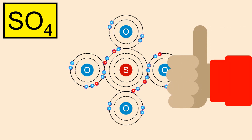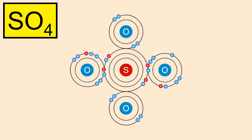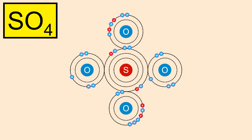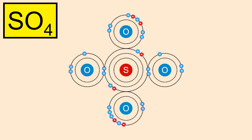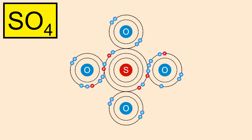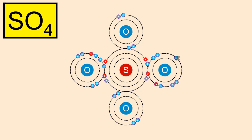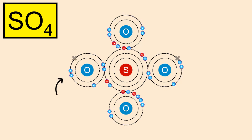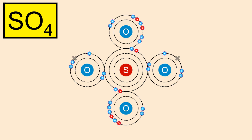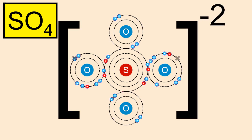This animated video shows how the octets of sulfur and the upper and lower oxygens are completed. Observing the animation, it can be seen that the right-sided oxygen requires one more electron to complete its octet, and similarly the left-sided oxygen also requires one more electron. Hence, as a whole, the sulfate radical has a vacancy of two electrons for fulfilling the octet of its constituents. This is the reason why sulfate shows minus two valency when combining with other elements.